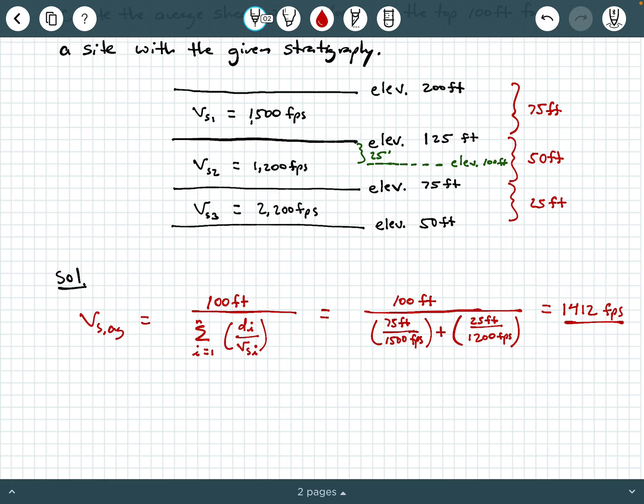So the moral of the story is be very careful when you're looking at stratified soils. And remember, when you are calculating an average shear wave velocity for the purposes of using the equivalent lateral force method, ASC 722 tells us that we're only interested in the soil layers and the soil properties within the top 100 feet. So watch out for that.